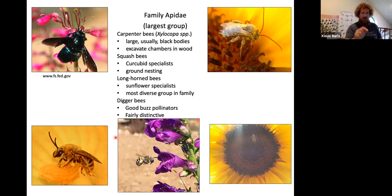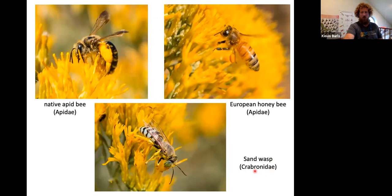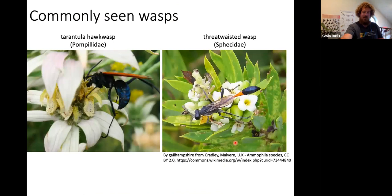Looking back at our rabbit brush photos: we had our native Apid bee, our non-native European honeybee, and the other one that wasn't the fly was a sand wasp in genus Bembix, family Crabronidae. We can look at what differentiates it from bees: there are no pollen-collecting hairs on the back legs, and it is in general less furry — though differentiating bees and wasps in some circumstances is going to be plain old tricky. But sometimes there are easy ones, and that's what we're working on.